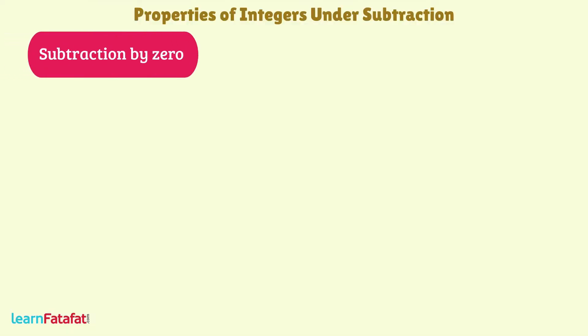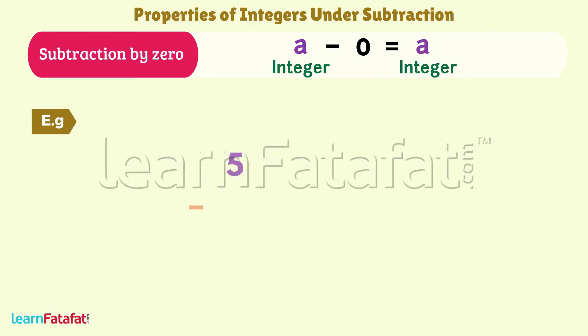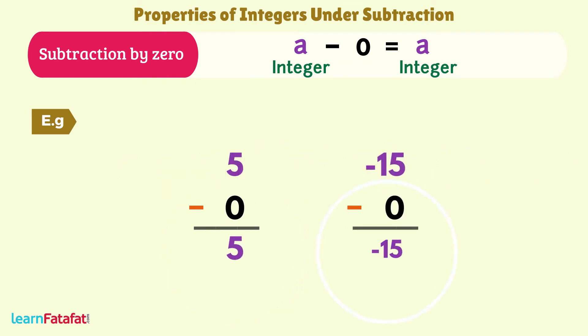Subtraction by 0: If 0 is subtracted from any integer a, the result is the same integer again. a minus 0 equals a. For example, 5 minus 0 is 5. Minus 15 minus 0 equals minus 15.